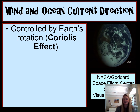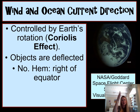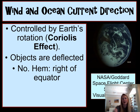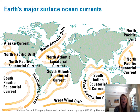What helps determine the direction of winds and currents is something called the Coriolis effect. Because the Earth is spinning, anything moving gets deflected depending on what hemisphere you're in. Imagine standing at the equator and throwing something toward the pole — because Earth is spinning, you'll see a deflection of that object. In the northern hemisphere, things get deflected to the right; in the southern hemisphere, they get deflected to the left. Water and wind on Earth are both affected this way.